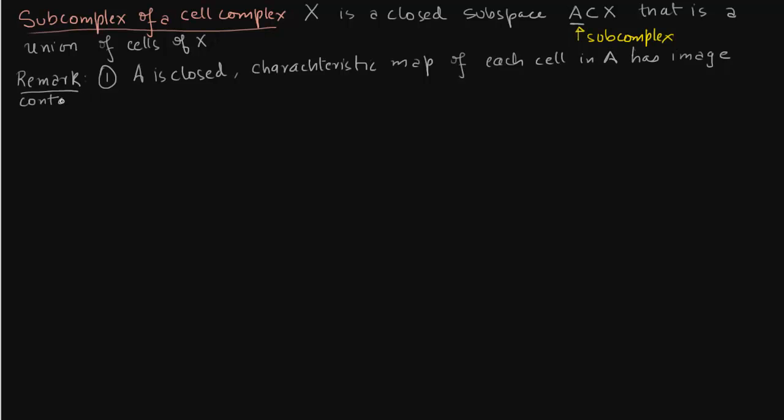Now why are we talking about the characteristic map? Because the attaching map is just a small part of the characteristic map. We want that the attaching map of each cell in A is also contained in A, which will follow from remark 1.